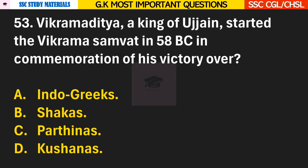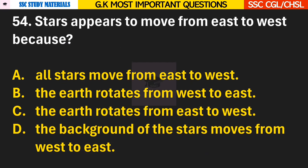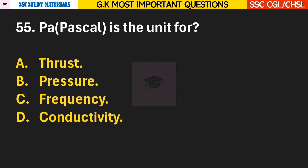Question 53: Vikramaditya, a king of Ujjain, started the Vikrama Samvat in 58 BC in commemoration of his victory over? Answer B — Shakas. Question 54: Stars appear to move from east to west because? Answer B — the earth rotates from west to east. Question 55: Pascal (Pa) is the unit for? Answer B — it is the unit for pressure.